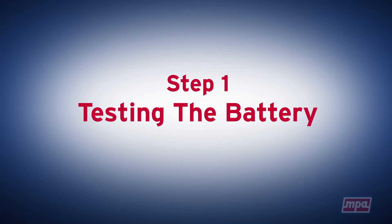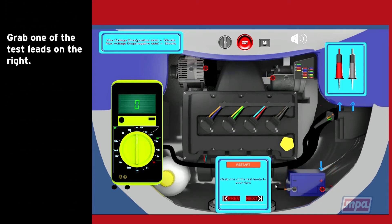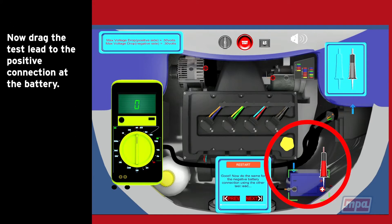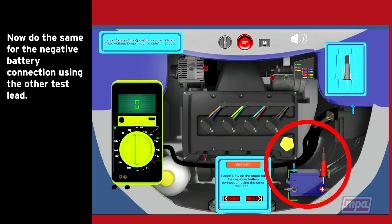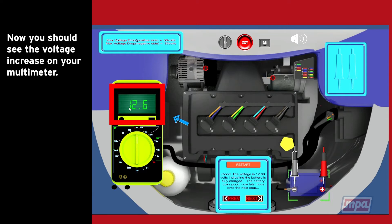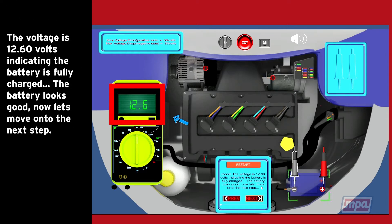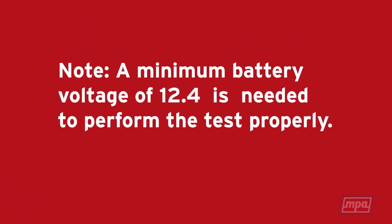Step 1: Testing the battery. Start by testing the battery. Grab one of the test leads on the right. Now drag the test lead to the positive connection of the battery. Now do the same for the negative battery connection using the other test lead. You should see the voltage increase on the multimeter. The voltage is 12.6 volts, indicating the battery is fully charged. A minimum battery voltage of 12.4 is needed to perform this test properly.